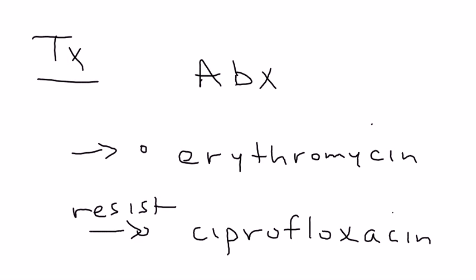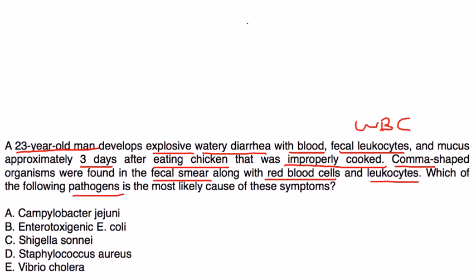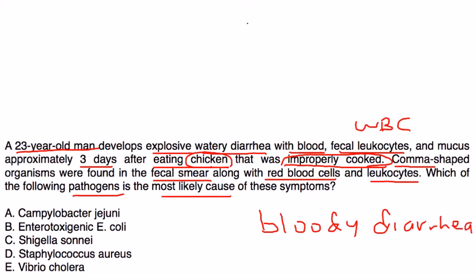Clinical vignette: A 23-year-old man develops explosive watery diarrhea with blood, fecal leukocytes, and mucus approximately three days after eating improperly cooked chicken. Comma-shaped organisms were found in the fecal smear along with red blood cells and leukocytes. Which pathogen is most likely the cause? This is a great vignette — you have the poultry ingestion, improperly cooked, bloody diarrhea, and the comma-shaped organism. The answer is Campylobacter jejuni.